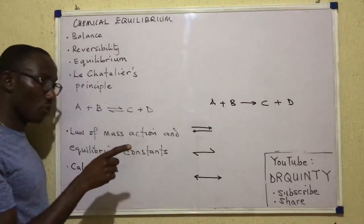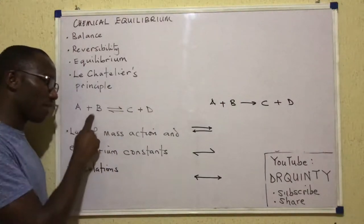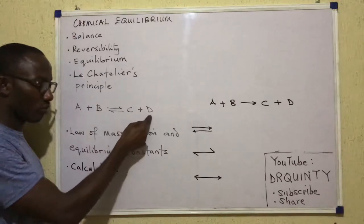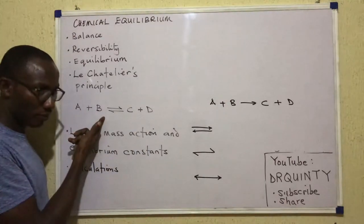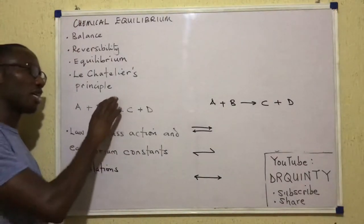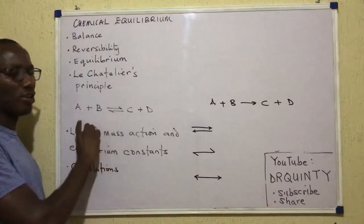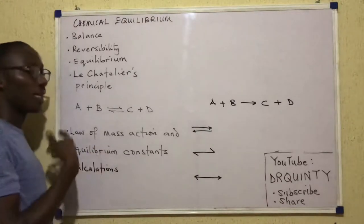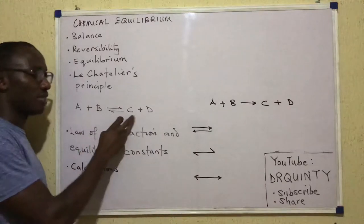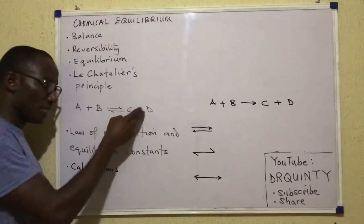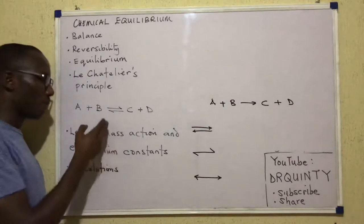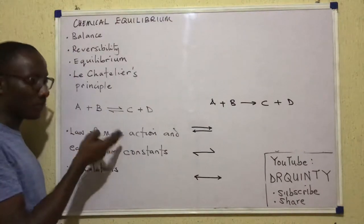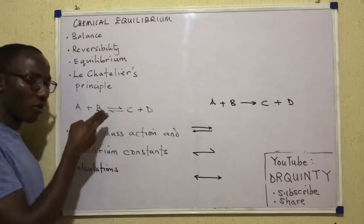It's important to note that in the forward reaction, A and B will be called reactants while C and D are products. Whereas in the backward reaction, C and D are called reactants while A and B are called products. It's also important to mention that equilibrium can be achieved by either of these two routes. I could put A and B into a container, and after some time, I have A, B, C, and D in the container. But it's also true that if I put C and D into a container, after some time, I would have C, D, A, B in the container. So it doesn't matter which reaction starts first — both reactions will occur at the same time.